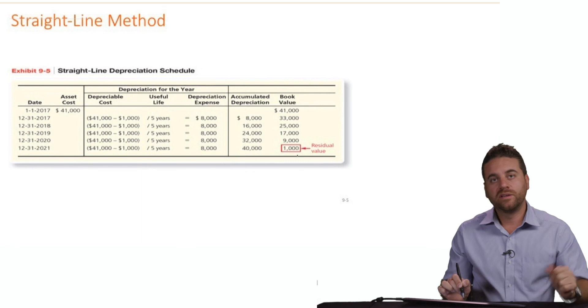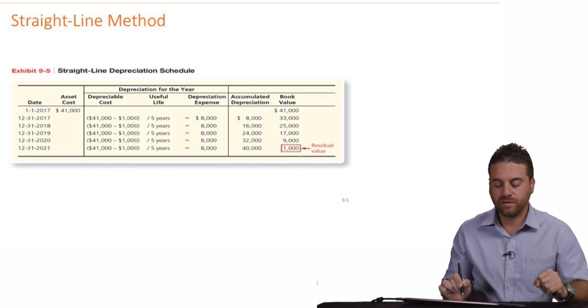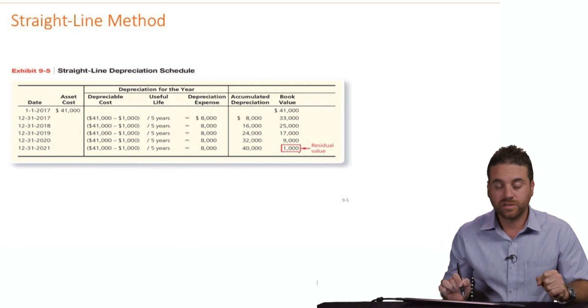That was the straight line method. In the next video, we will discuss the second method of depreciation, which is units of production.